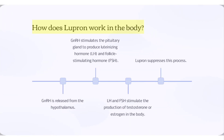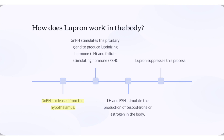How does Lupron work in the body? GnRH is released from the hypothalamus, which stimulates the pituitary gland to produce luteinizing hormone (LH) and follicle-stimulating hormone (FSH). LH and FSH stimulate the production of testosterone or estrogen in the body. Lupron suppresses this process.